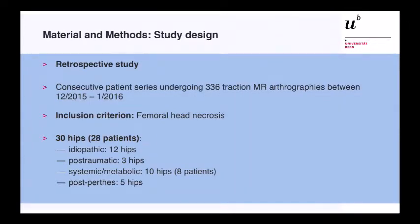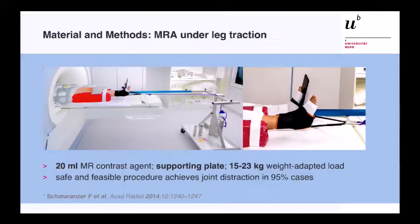This is a retrospective study on a patient series from 336 traction MRIs during a one-year period at our institution. We had an inclusion criterion of femoral head necrosis and identified 30 hips with AVN from the classical causes as we've just heard.